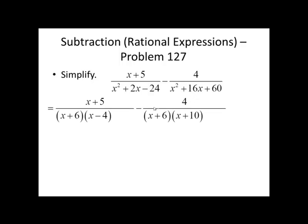Now we're trying to build up the denominator so that they are exactly the same. This first fraction is missing an x plus 10. So we'll multiply numerator and denominator by x plus 10. The second fraction is missing an x minus 4. So we'll do the same, top and bottom. We'll multiply by x minus 4. Now the denominators have the same three factors, so we've reached a common denominator.